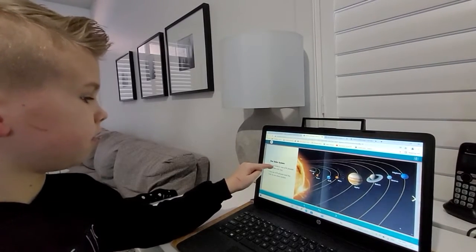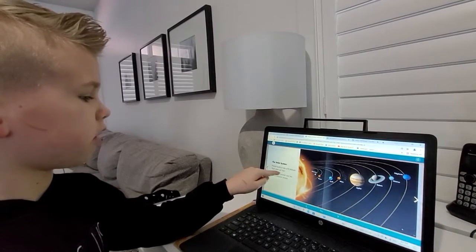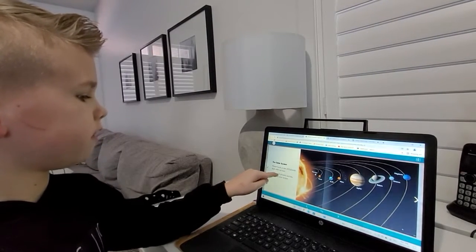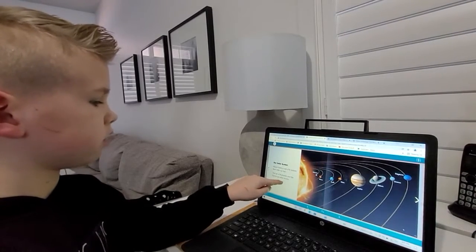Our solar system. Planet Earth is one of eight planets that orbit our sun. This set of a planet and the sun is our solar system.